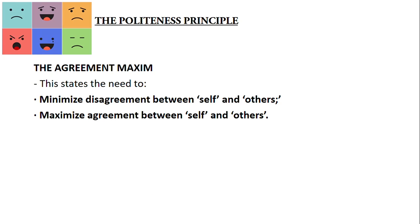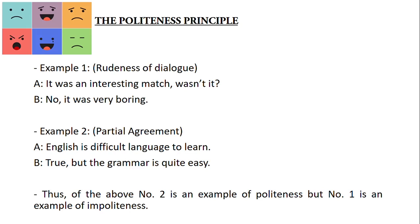For the agreement maxim, this states the need to minimize disagreement between self and others, and maximize agreement between self and others. For the first example, which exhibits rudeness: Speaker A says 'It was an interesting match, wasn't it?' and Speaker B replies 'No, it was very boring.' For the second example, which expresses partial agreement: Speaker A says 'English is a difficult language to learn,' and Speaker B replies 'True, but the grammar is quite easy.' Thus, example two is an example of politeness, but example one is an example of impoliteness.